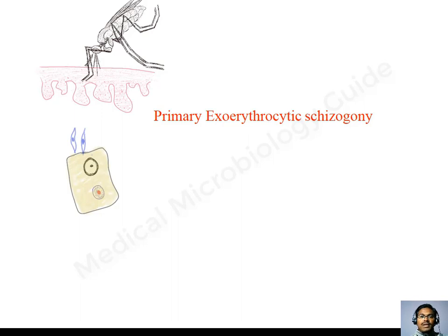In the liver, they bind to the hepatocytes. There are some specific receptors at which the sporozoites will bind. Sporozoites have circumsporozoite protein, and with the help of circumsporozoite protein, they will bind to the CD81 receptor along with the co-receptor SR1B, that is scavenger receptor 1B. Once they bind to these receptors, the parasite will induce the internalization of the sporozoites into the cytoplasm.